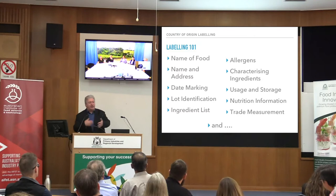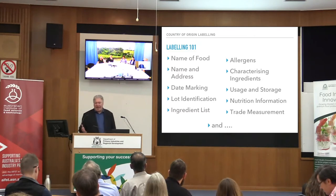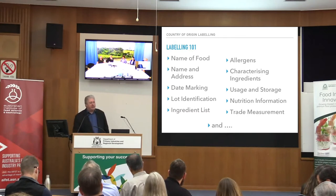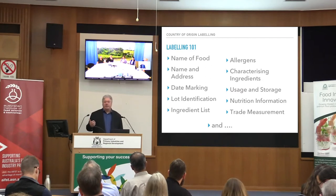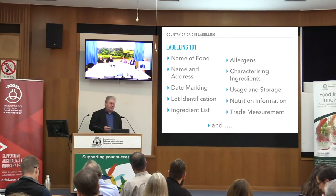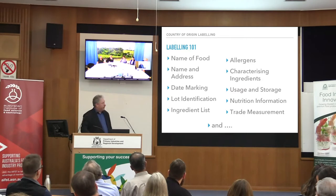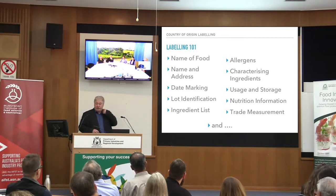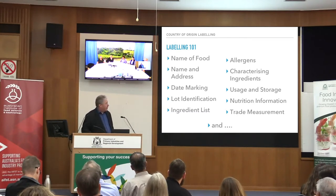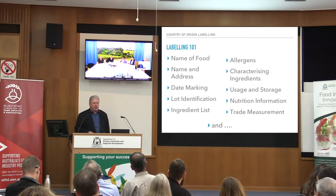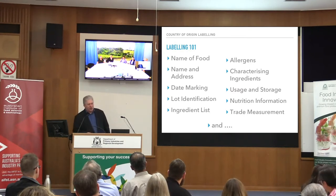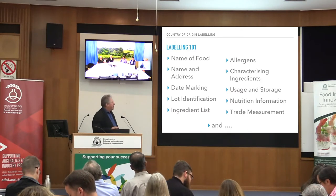Characterising ingredients: this is the percentage declarations. People generally don't have particular problems with this. A characterising ingredient or component is something really highlighted in the name of your food — it's in the name, described on the food, or shown in pictures on your label. That's the sort of thing you're going to have to percentage-declare. Usage and storage instructions — this can be safety stuff, so pay attention to it. And of course, nutrition information. Please, in your panels, do not put the letters 'AL' after nutrition. It is a 'nutrition information panel,' not 'nutritional.'